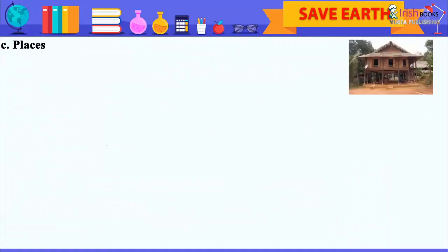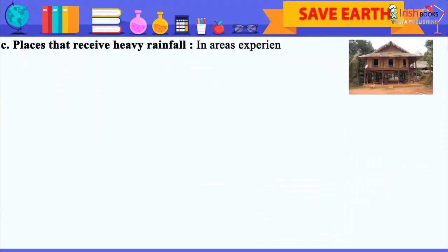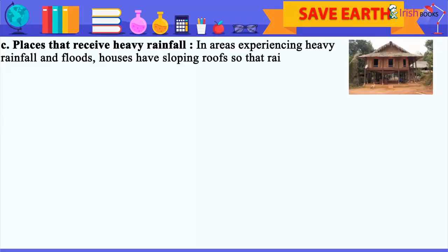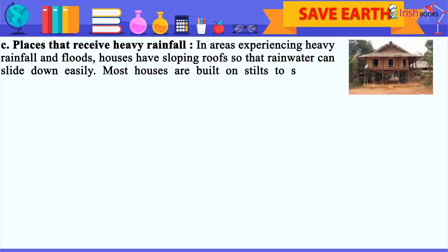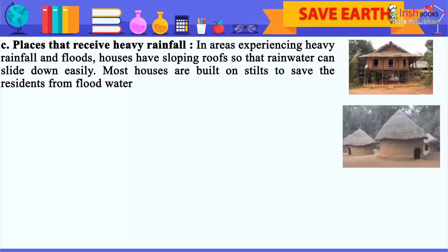C. Places that receive heavy rainfall: In areas experiencing heavy rainfall and floods, houses have sloping roofs so that rainwater can slide down easily. Most houses are built on stilts to save the residents from flood water.